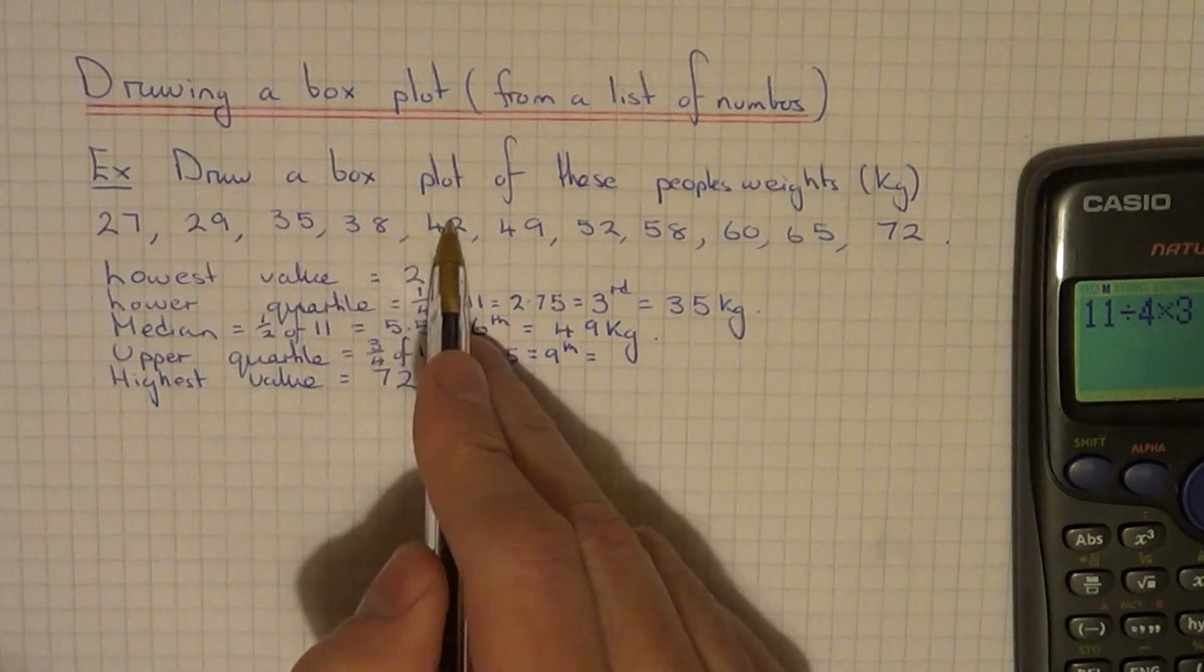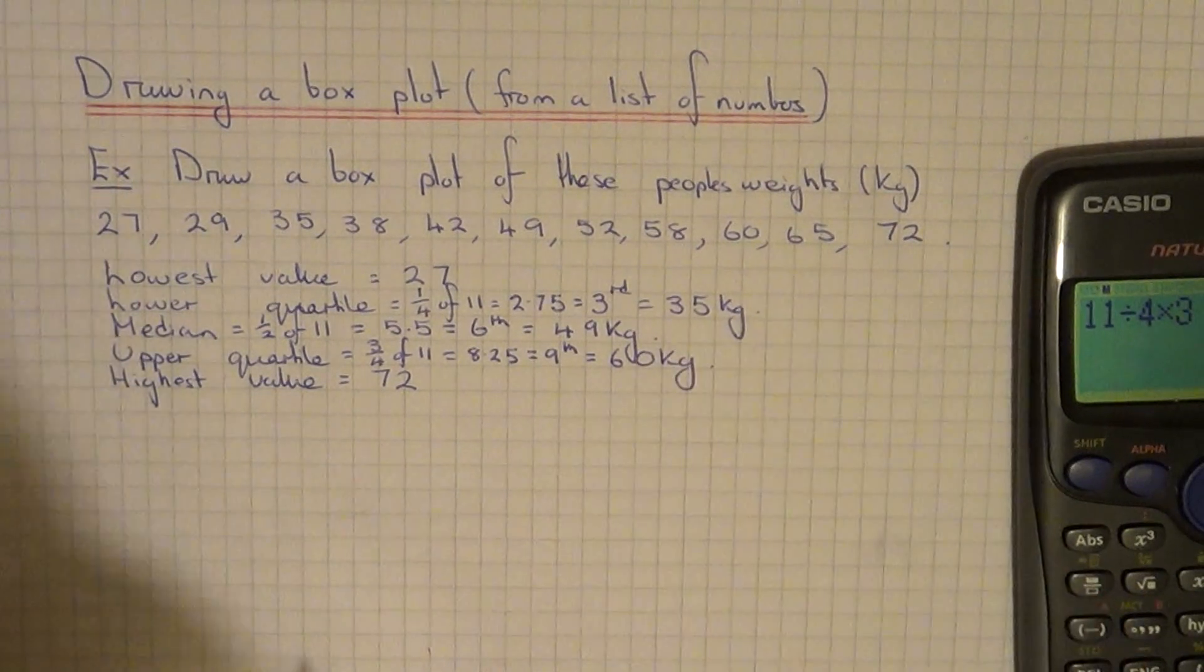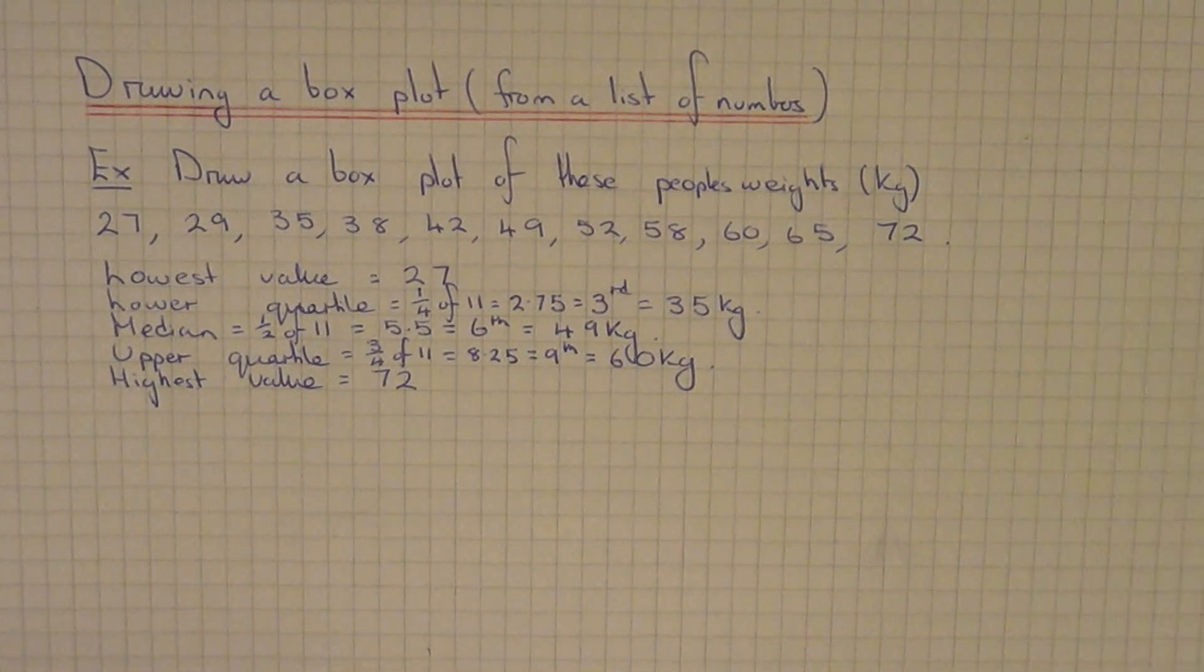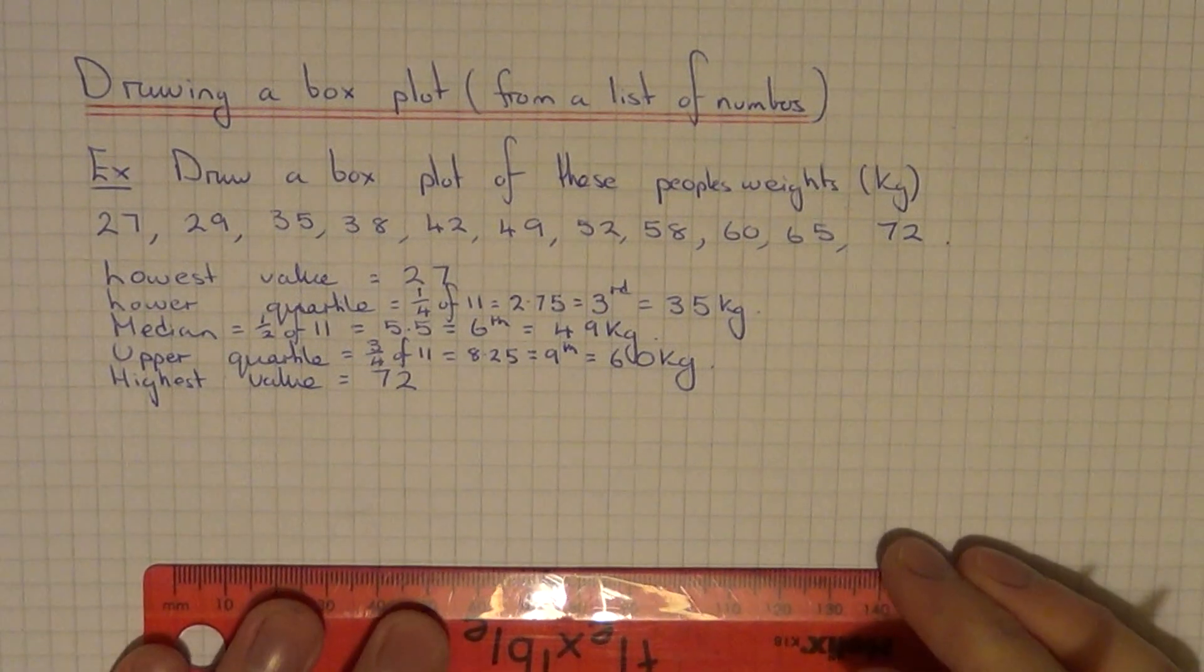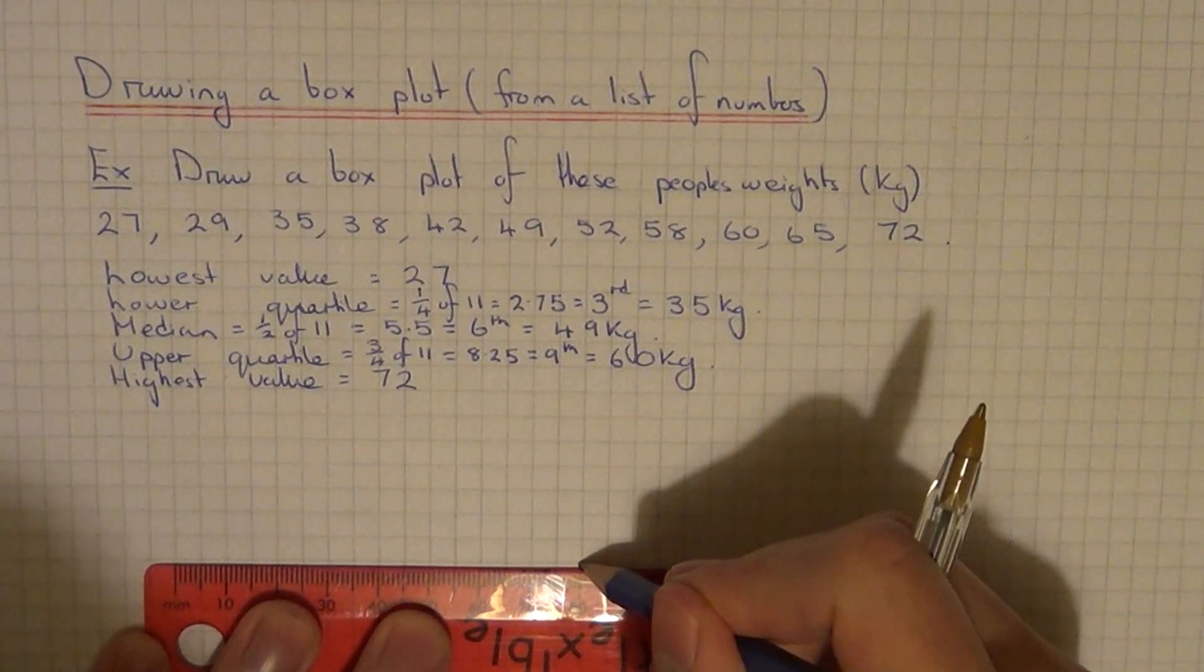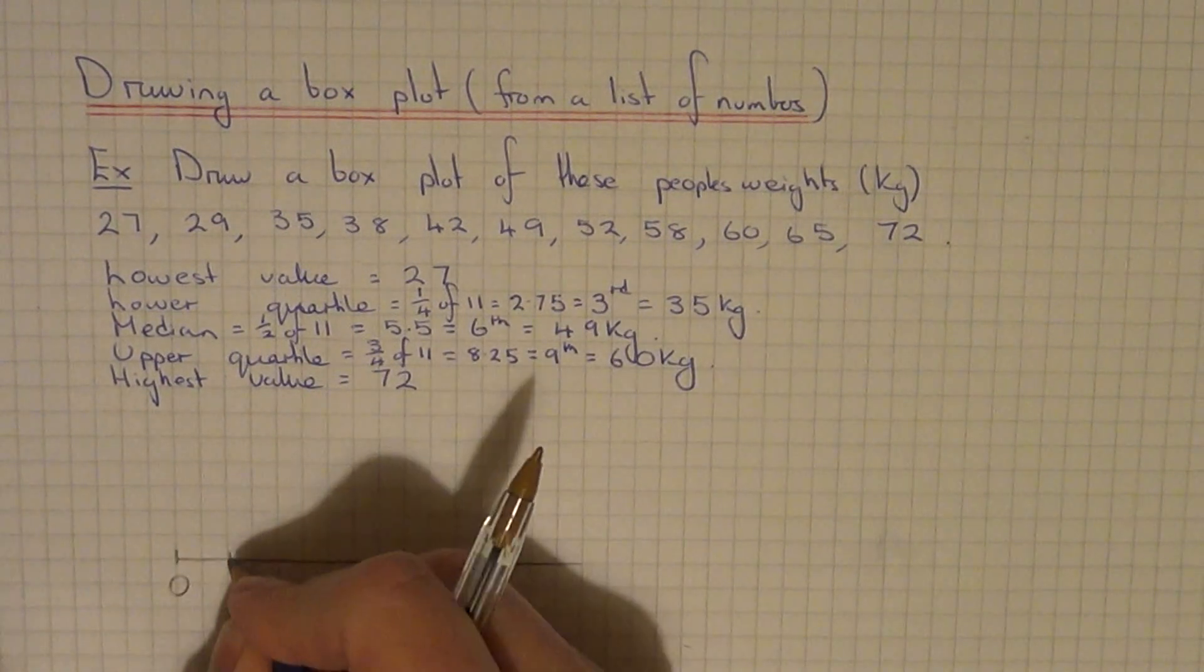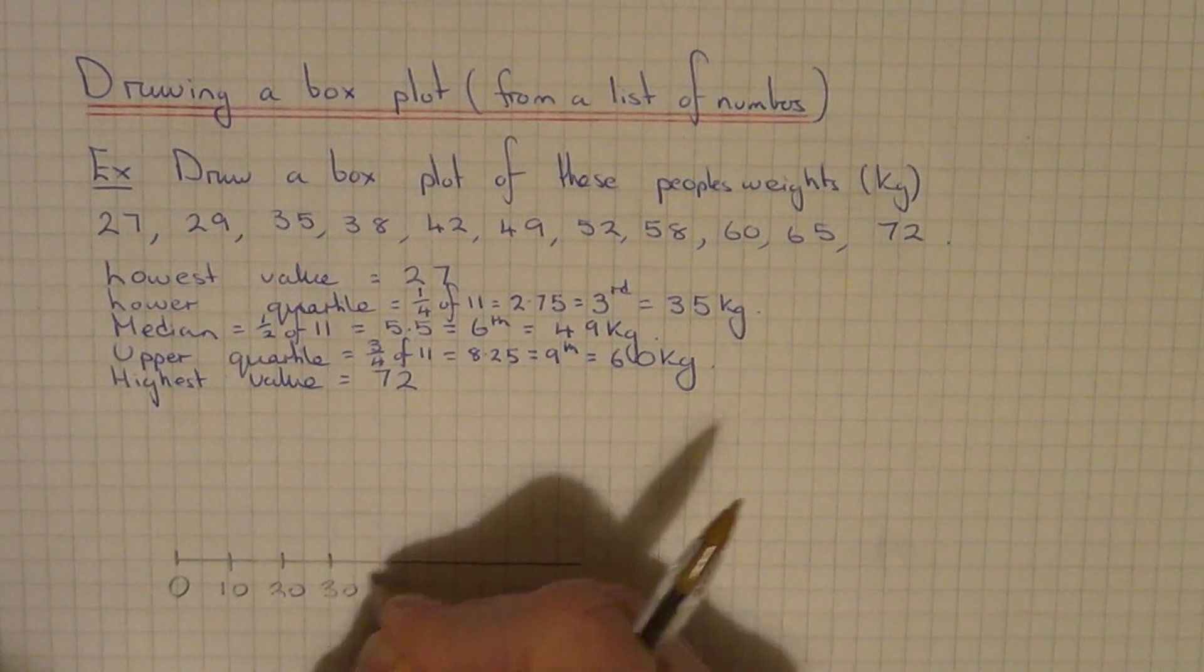1, 2, 3, 4, 5, 6, 7, 8, 9. That gives us 60 kilograms. Once we've got our measurements, we just need to draw our box plot. Starting at zero, my highest was 72, so I'm going to go in tens up to 80 kilograms. It doesn't really matter what scale you choose.